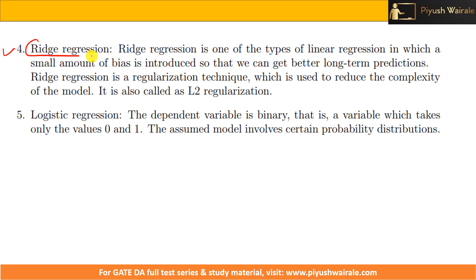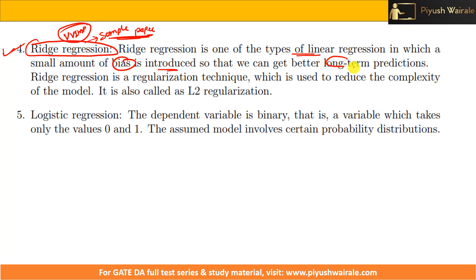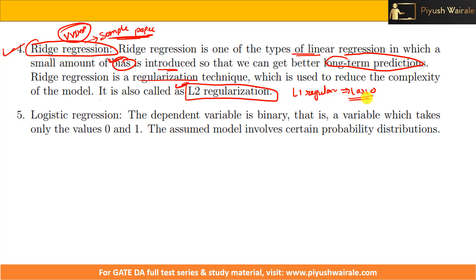Ridge regression is very important from a GATE exam point of view — one question has been asked from the GATE sample paper on this topic. Ridge regression is a type of linear regression in which a small amount of bias is introduced so that we can get a better long-term prediction. It is a regularization technique used to reduce the complexity of the model, and it is called L2 regularization. There is also L1 regularization, which is called lasso regression, but that is not in the syllabus so we will not cover it.